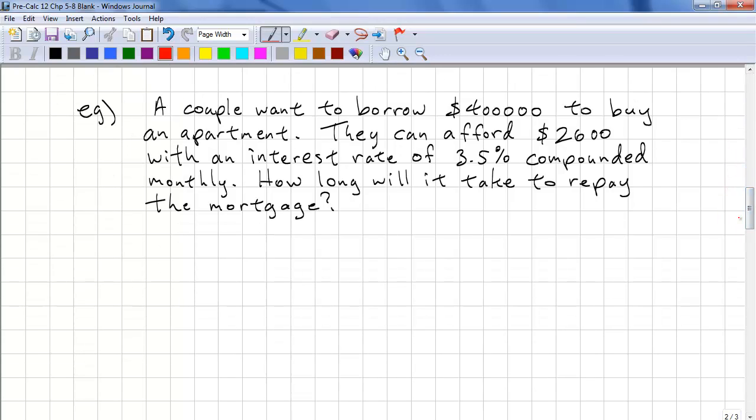Let's look at another problem. A couple want to borrow $400,000 to buy an apartment. They can afford $2,600 a month with an interest rate of 3.5% compounded monthly. How long will it take to repay the mortgage? Please note that if you're actually borrowing for a mortgage, mortgages are compounded semi-annually, which means twice a year. So our formula is PV equals.